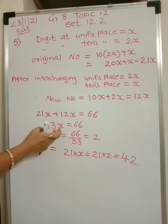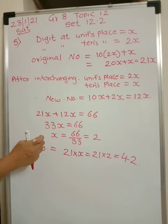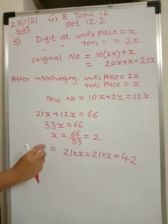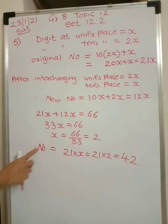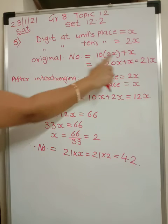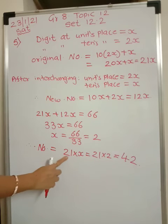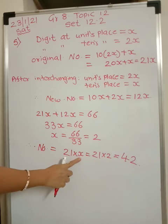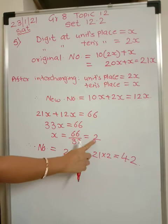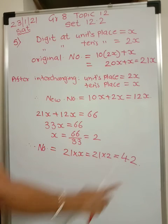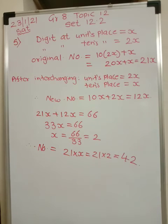This comes out to be 33x equal to 66, so x equals 2. We have to find the original number, which is 21x. So 21 into 2 gives us 42.